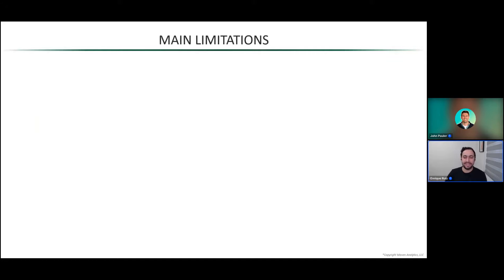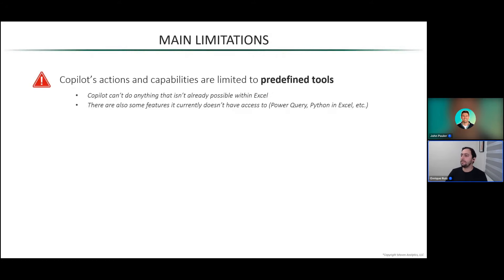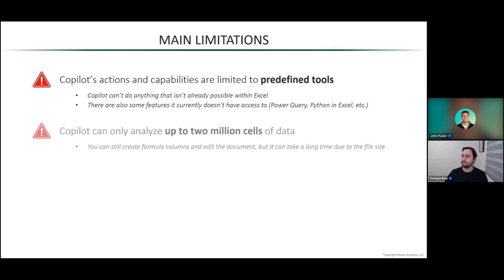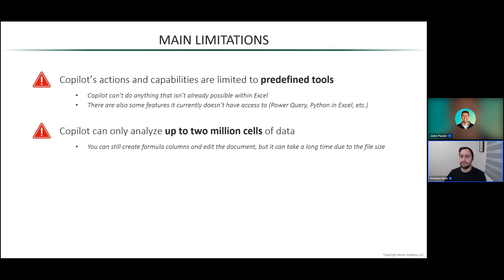What are some of Copilot's limitations besides being slow? Copilot's actions are limited to predefined tools — it can't do anything that isn't already possible in Excel. There are also some Excel features that Copilot doesn't have access to; the most important one right now is Power Query. However, it looks like they're going to start rolling out Python and Excel for Copilot pretty soon, which is quite exciting and might take all of this to the next level.